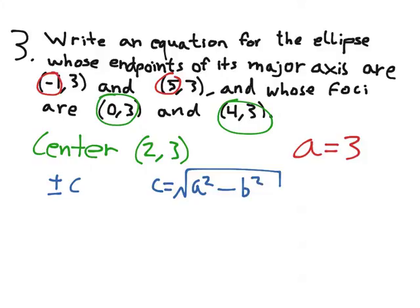So to find c, I have to go from the center, and I add something to get to one foci, and add something to get to the other. This means c must be equal to 2, because 2 plus 2 is 4, 2 minus 2 is 0. And that's how I can get these x coordinates.